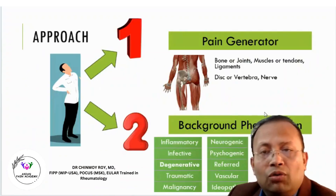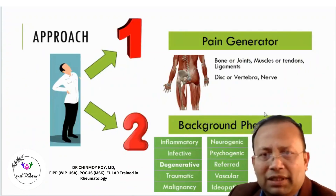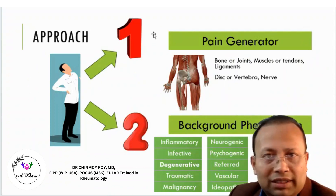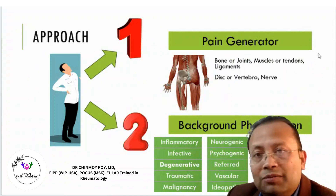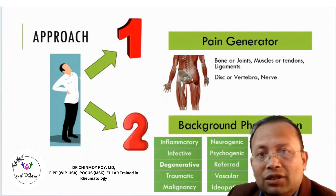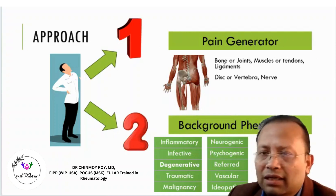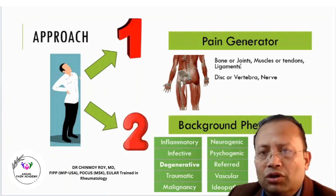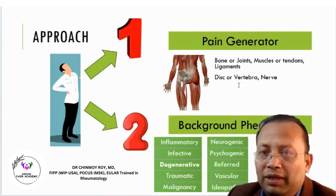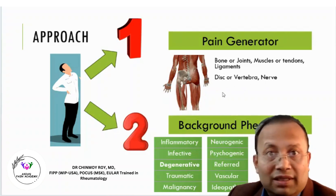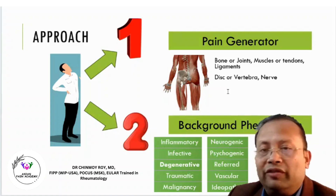When we treat any pain patient, we assess them under two headings. One is the pain generator. Whatever structure exists in the body can be a pain generator — bone or joints, muscles, tendons or ligaments. In the spine, it can be a disc, vertebra, or nerve. And nowadays, fascia is also another source of pain generation.